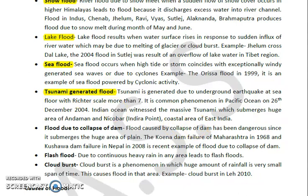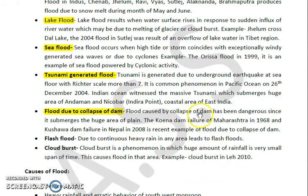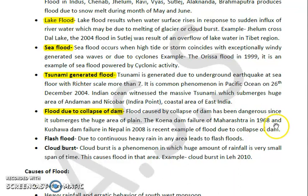Then we have flood due to the collapse of dams, which is an important aspect in a country like India. These floods are caused by the sudden collapse of dams and are particularly dangerous because they submerge huge areas. For example, the Koyna Dam in Maharashtra failed in 1968, and the Kushbaha Dam failure in Nepal in 2008 are two important examples of flood due to dam collapse.